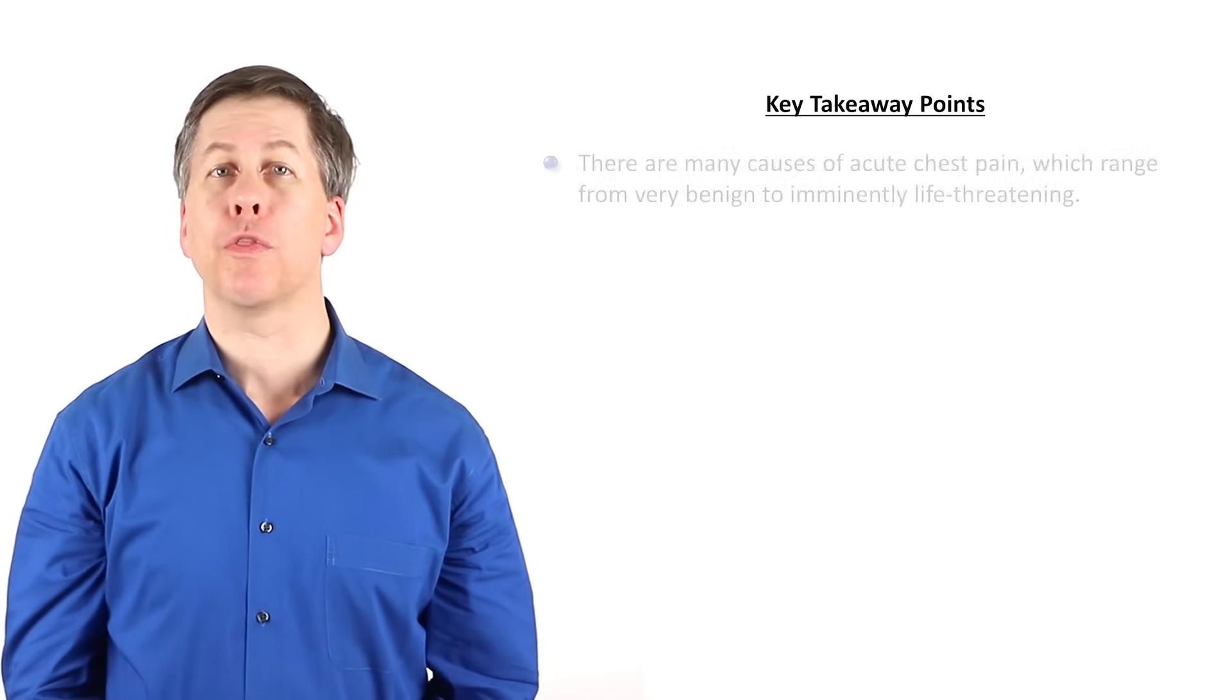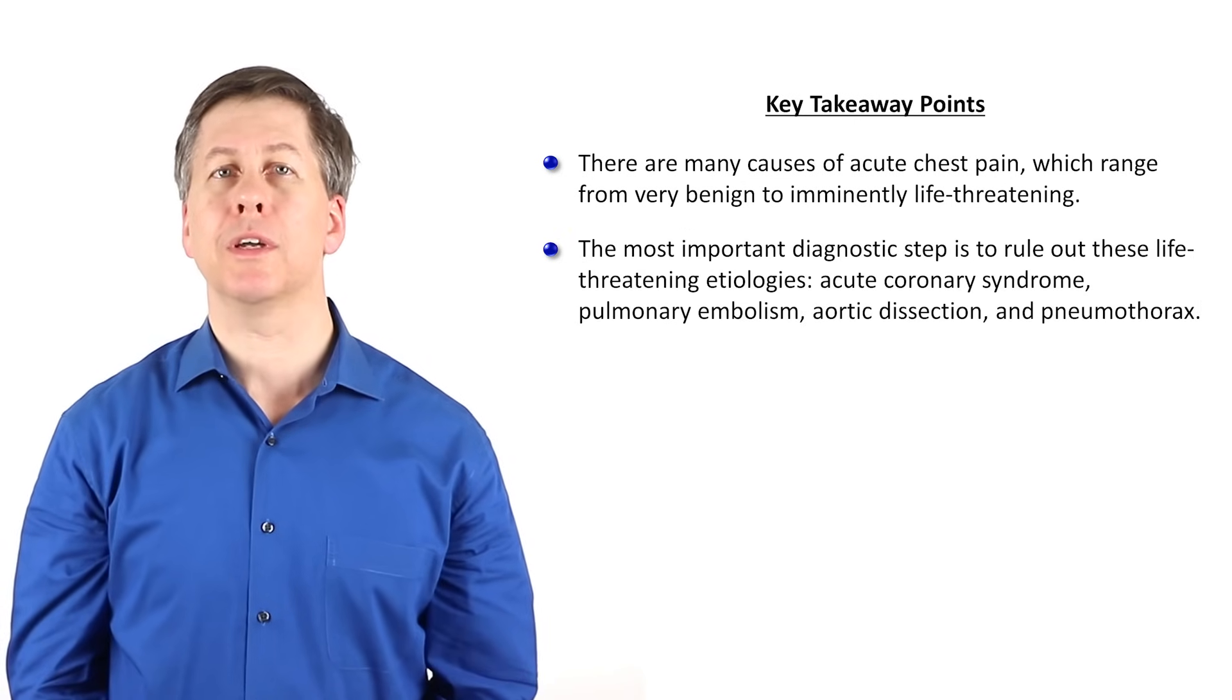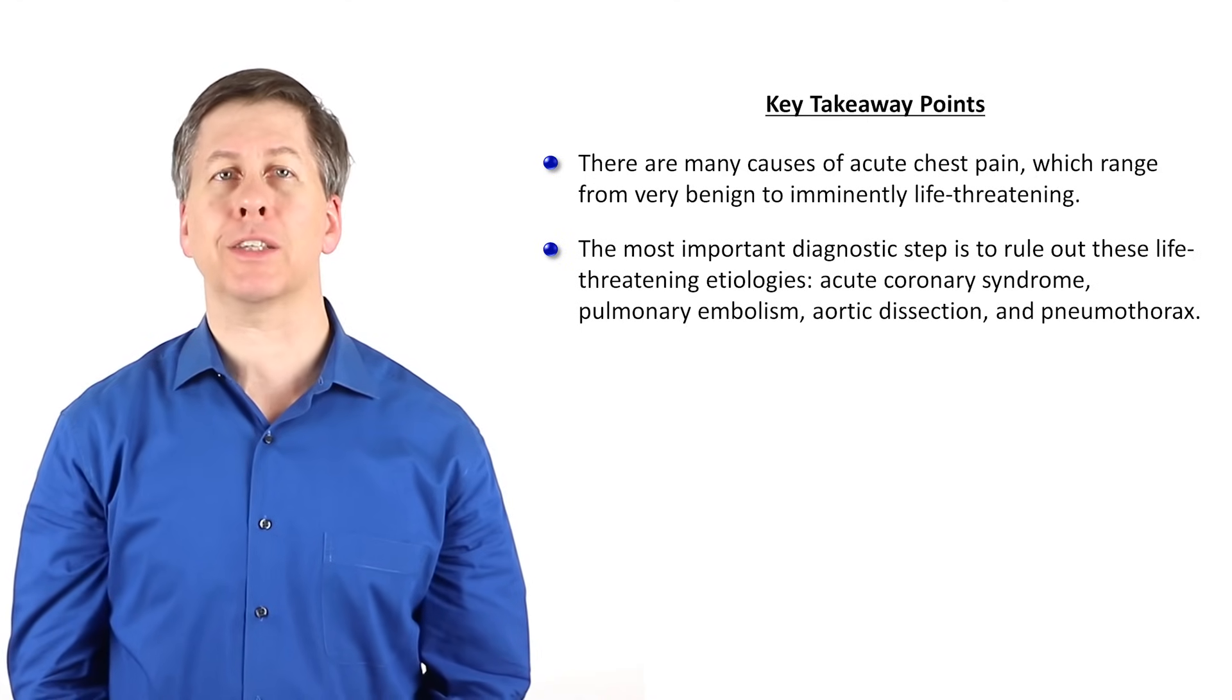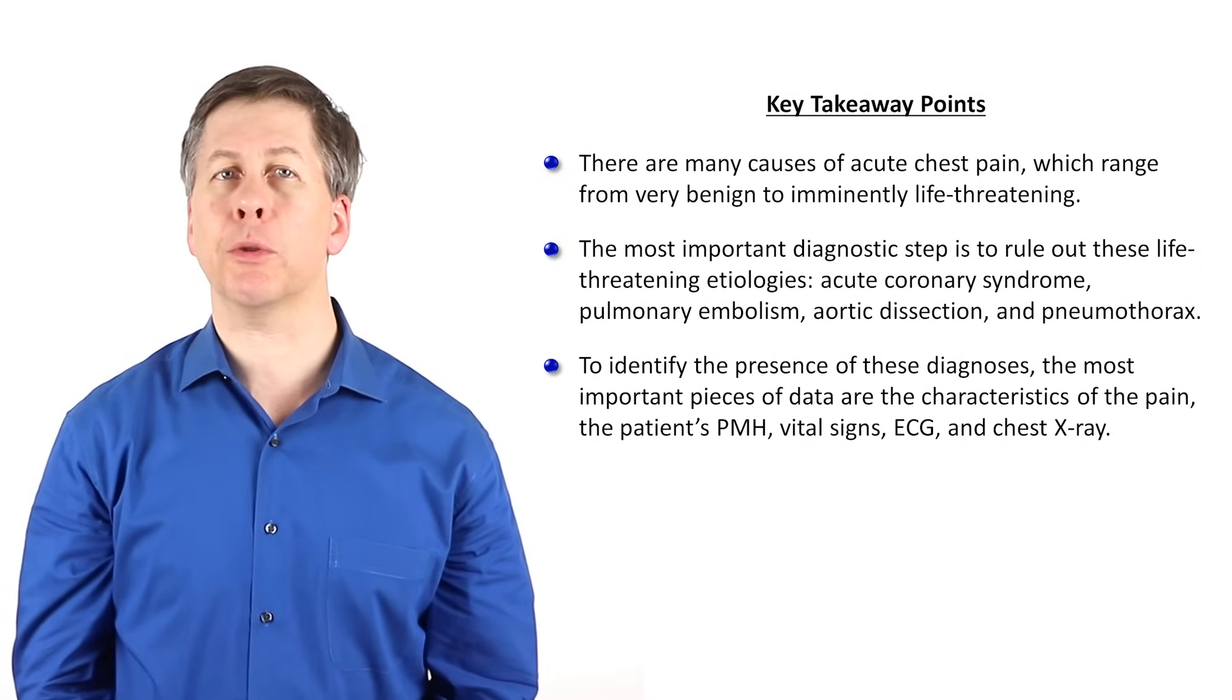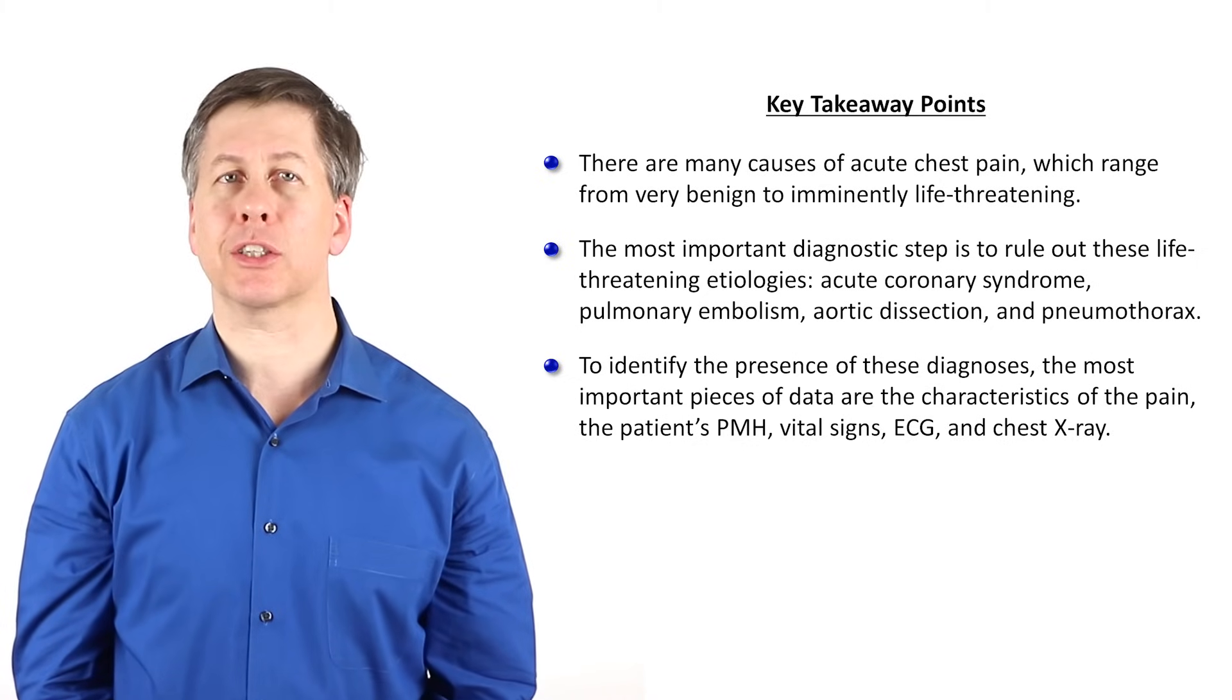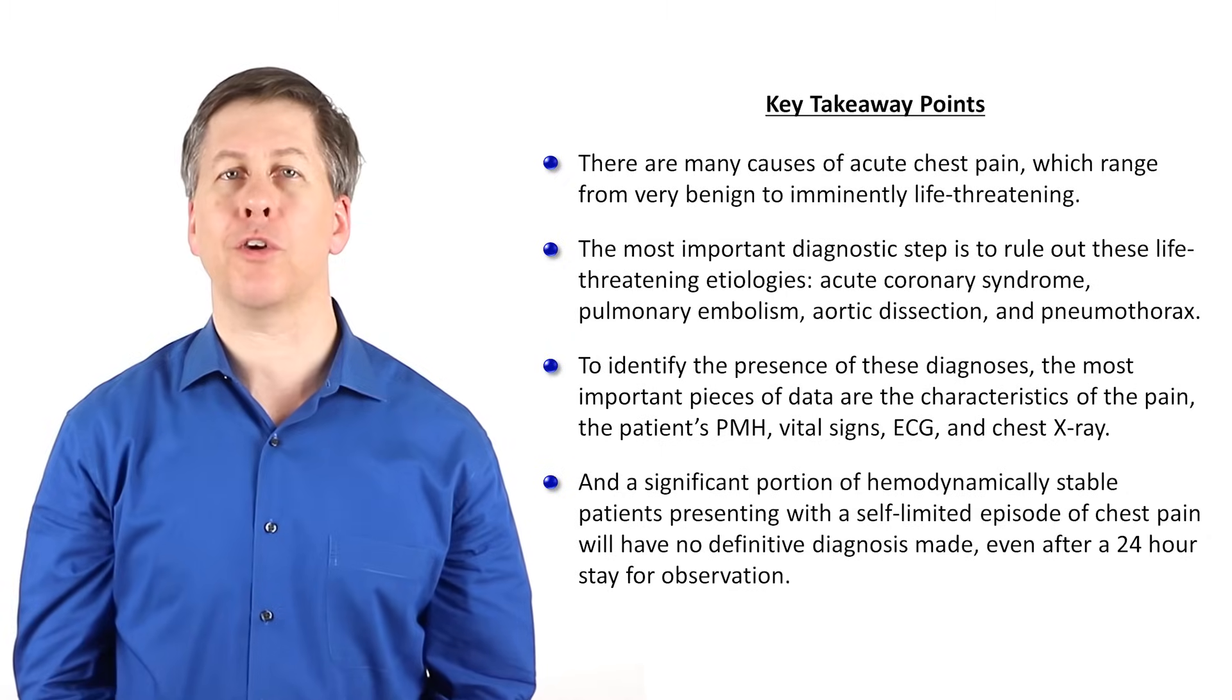Take home points for this video. There are many causes of acute chest pain which range from very benign to imminently life threatening. The most important diagnostic step is to rule out these life threatening etiologies: acute coronary syndrome, pulmonary embolism, aortic dissection, and pneumothorax. To identify the presence of these diagnoses, the most important pieces of data are the characteristics of the pain, the patient's past medical history, vital signs, ECG, and chest x-ray, and a significant portion of hemodynamically stable patients presenting with a self-limited episode of chest pain will have no definitive diagnosis made even after a 24-hour stay for observation.